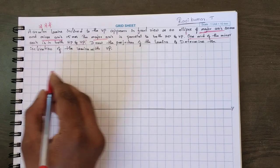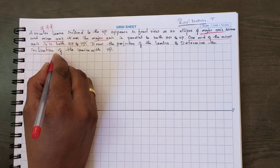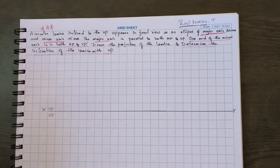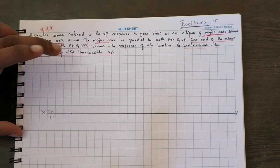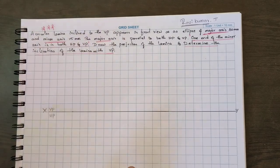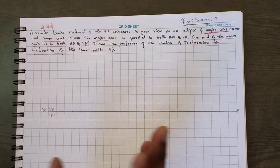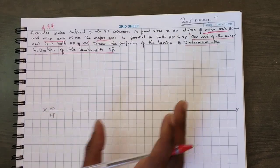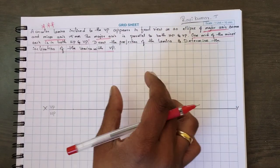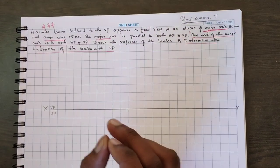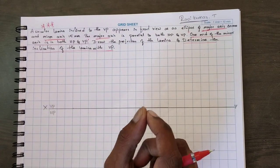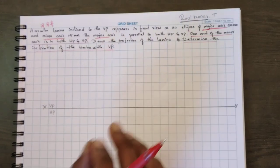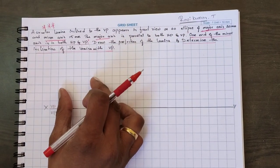One more thing you have to understand: they said inclination of lamina with VP, so you have to find out the inclination of lamina with VP. If you want to find out the inclination angle with VP and the surface of lamina inclined to VP, you want to place the lamina in VP. If you place the lamina in HP, you can't find out the inclination of lamina with VP. Here they are given inclination of lamina with VP, so you have to place the lamina on VP only.